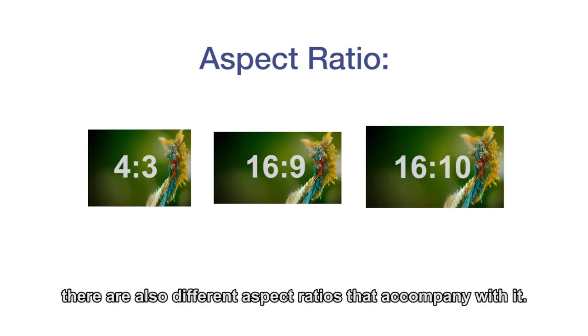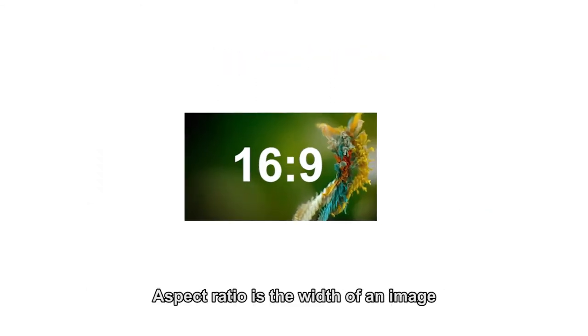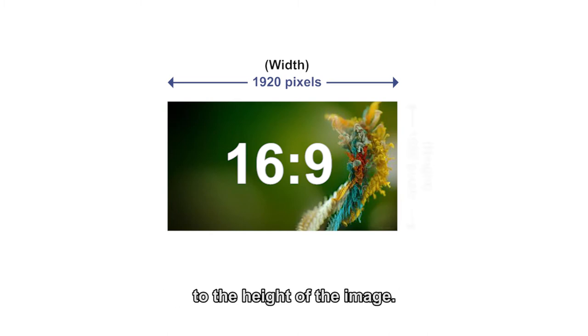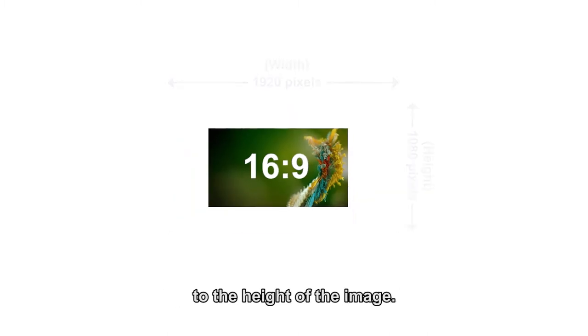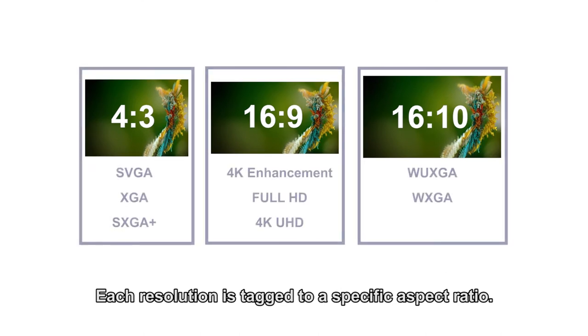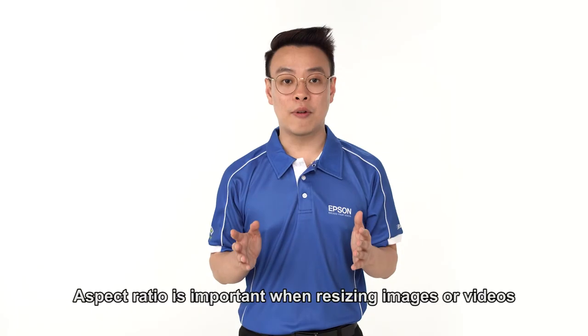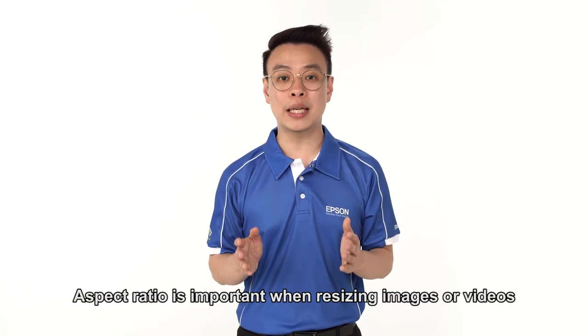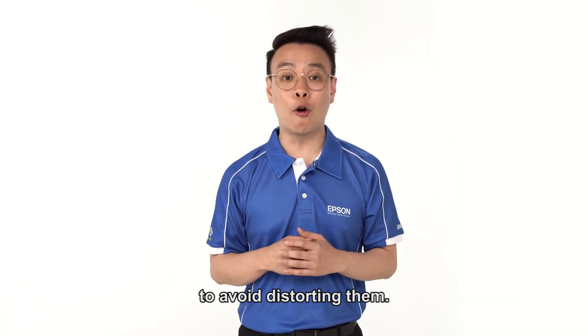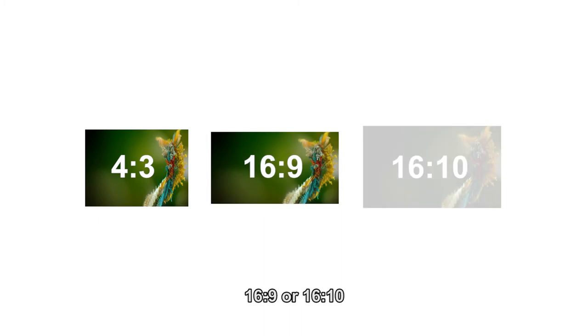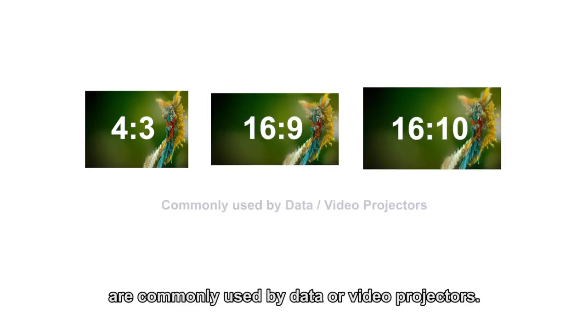Resolutions apart, there are also different aspect ratios that accompany with it. Aspect ratio is the width of an image to the height of the image. Each resolution is tied to a specific aspect ratio. Aspect ratio is important when resizing images or videos to avoid distorting them. 4x3, 16x9 or 16x10 are commonly used by data or video projectors.